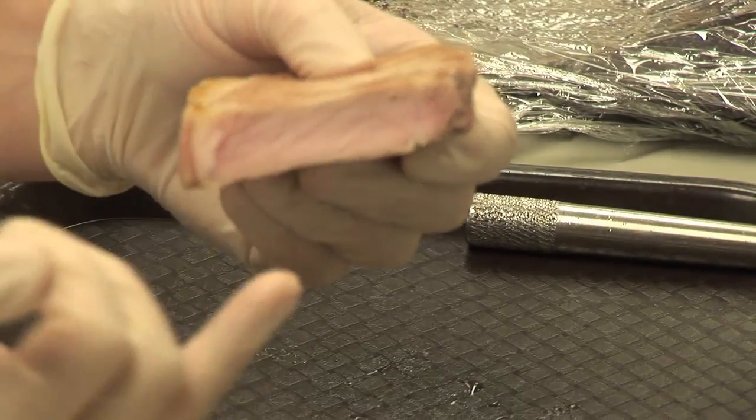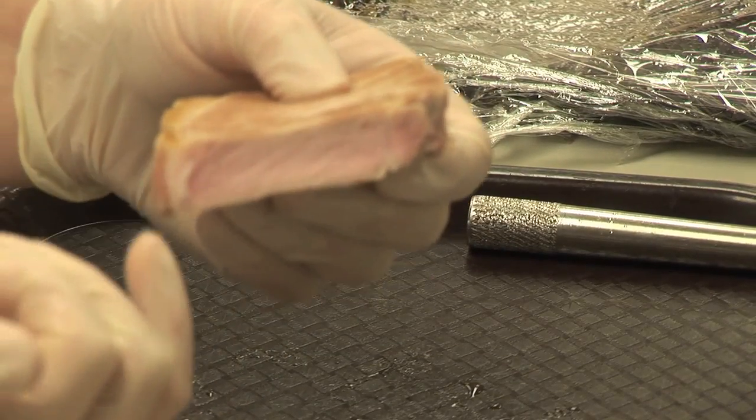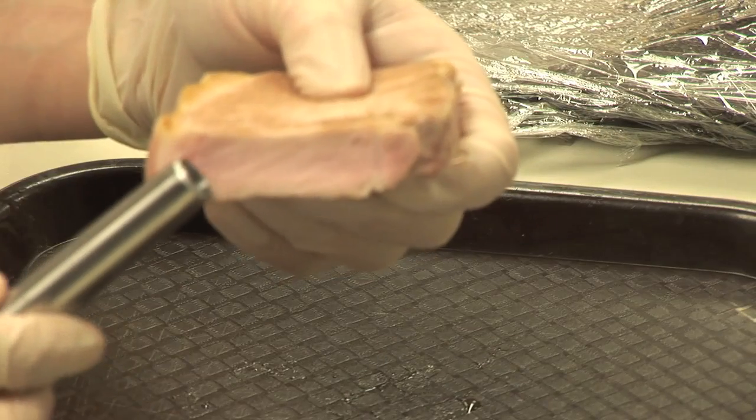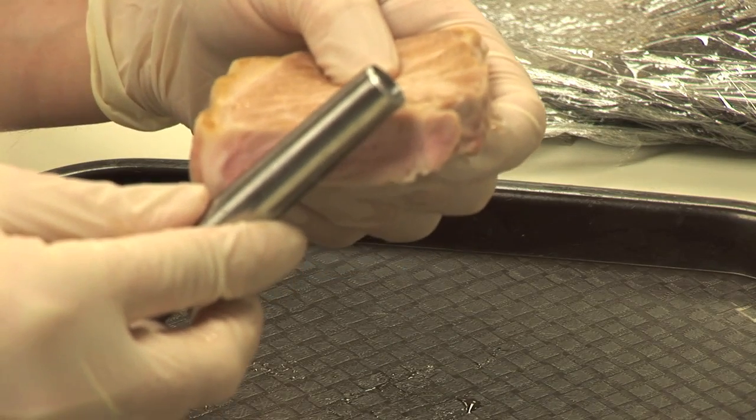As you can see in this loin chop, these are the directions of the muscle fibers. So we're going to take the core and we're going to run them parallel to the muscle fibers in order to get our cores.